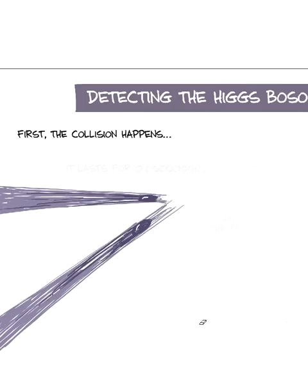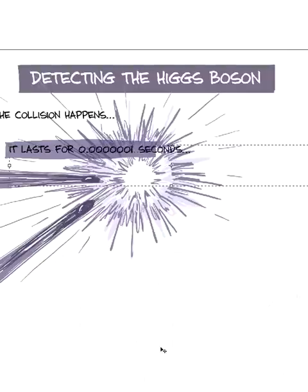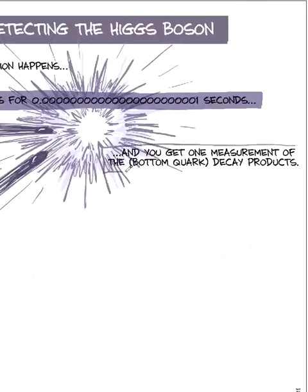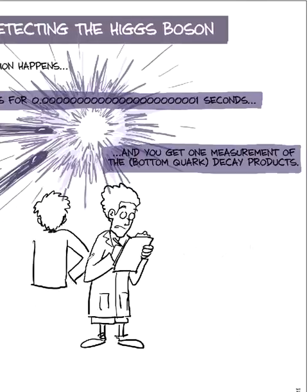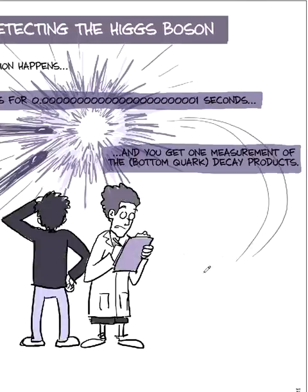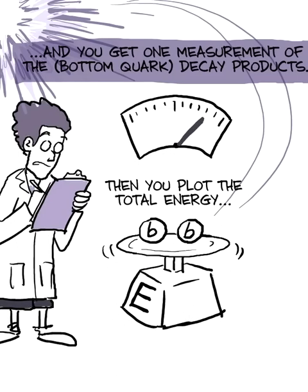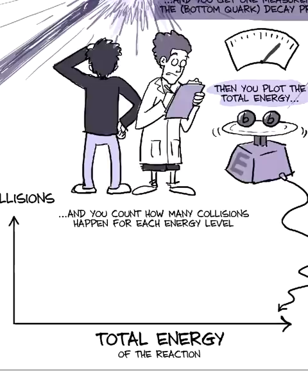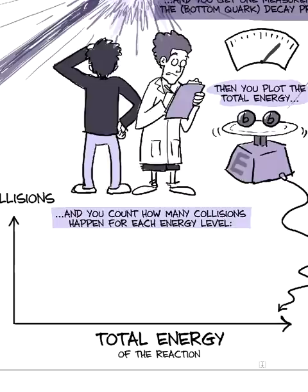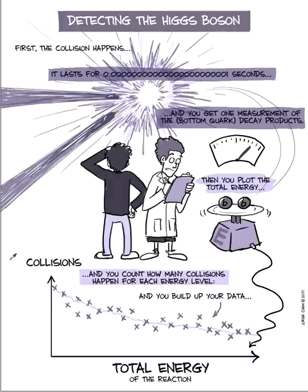Right, so the collision happens. It lasts for like 10 to the negative 23 seconds. And you get one measurement, right? So if you say, well I'm going to plot the mass, the total energy of this guy. So I'm going to add this guy and this guy together and add the total energy. This axis here is number of collisions. You do an individual experiment, you get one measurement, right? Here. You do another one, you get another measurement. You do another one, eventually you build up your data, right? And the data looks like this, for example.